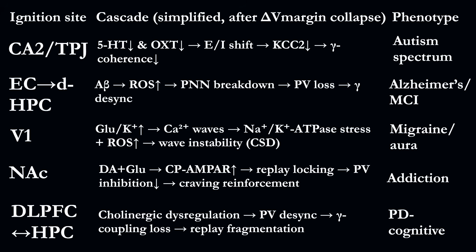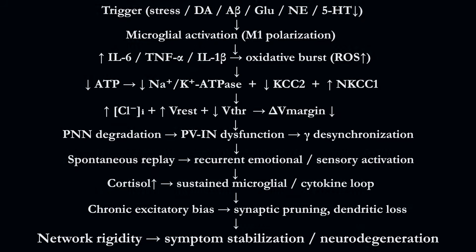A critical narrowing of the delta V-margin. No matter where this story begins — whether with dopamine, amyloid or serotonin — once the excitability margin falls below a critical threshold, the same universal mechanism takes over: microglia, cytokines and oxidative stress; progressively reduced ATP and KCC2; leading to the loss of parvalbumin inhibition and the breakdown of gamma-synchrony. The network enters a self-reinforcing loop — from stress to structure, from instability to disease.